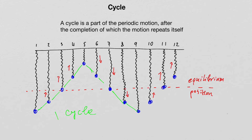This illustrates the meaning of 'the motion repeats itself.' If you took the first portion of the oscillation and superimposed it on top of the next, all positions of the masses would exactly overlap — you wouldn't be able to tell which is the first cycle and which is the second.